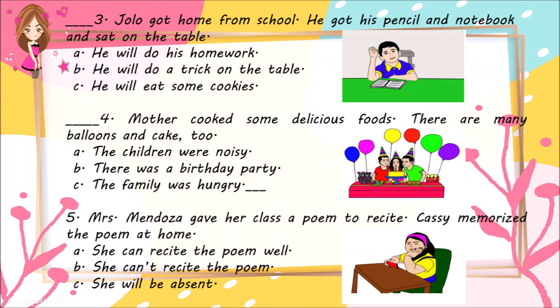Number 3: Jolo got home from school. He got his pencil and notebook and sat on the table. A. He will do his homework. B. He will do a trick on the table. C. He will eat some cookies.